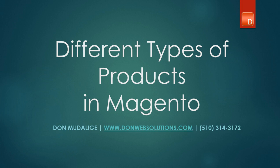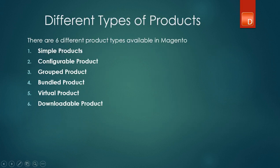Hello everyone, this is Don from DonWebSolutions.com and in today's tutorial we'll be discussing the different types of products used in Magento. There are six different kinds of products that Magento uses: simple, configurable, grouped, bundled, virtual, and downloadable products. I'm going to go through every single product and give you some examples so you can better understand them.